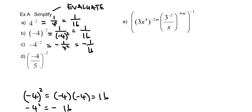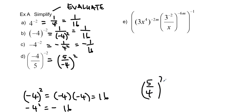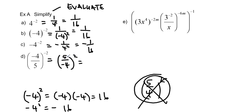The last example uses the a over b rule. We flip the fraction to get rid of the negative exponent: 5 over negative 4, to the negative 2, becomes negative 4 over 5 to the positive 2. Be careful not to move the negative from the base down — a lot of people mistakenly write 5 over positive 4 squared, but that's wrong. Keep the negatives in the base as they are, and just flip to remove the negative exponent. This gives 5 squared over negative 4 squared, which is 25 over 16.